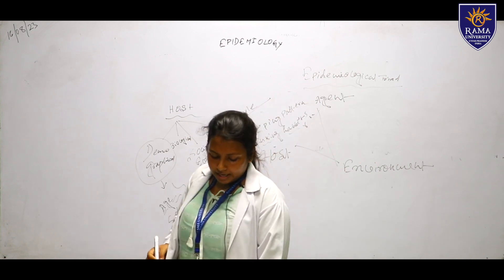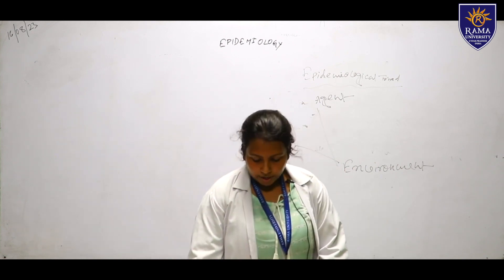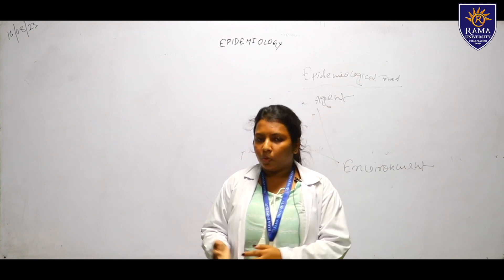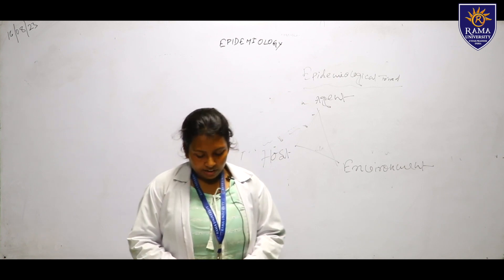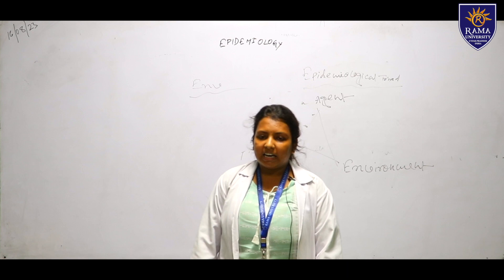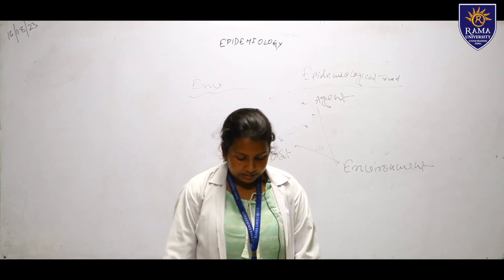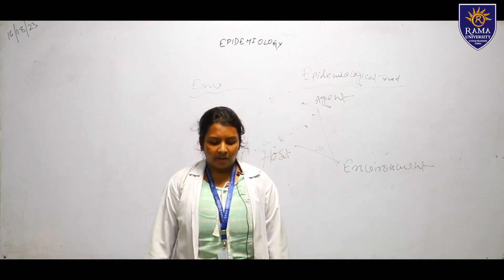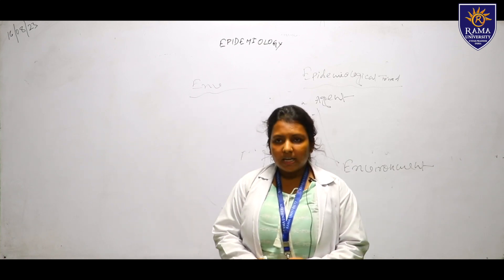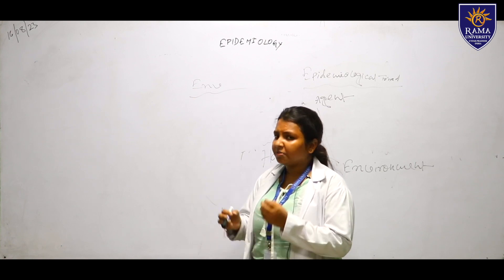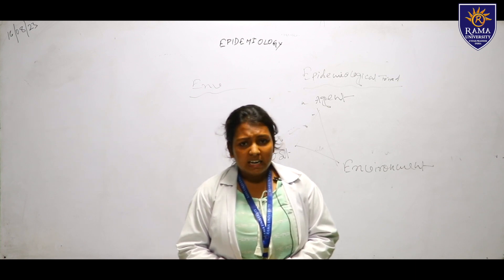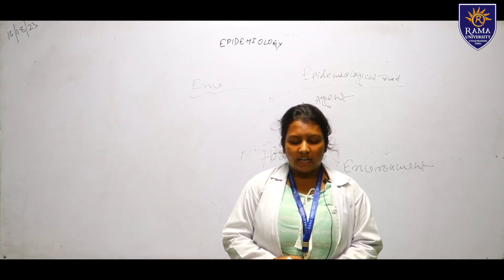Next we move to the environment. Environment is the condition where the disease grows. There are three types: first is physical environment, second is biological environment, and third is physiological environment. Physical environment includes air, water, sound, noise, and pollution.